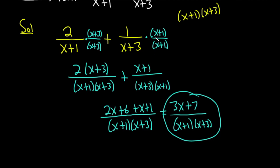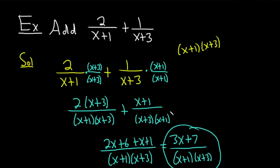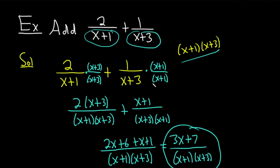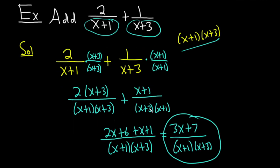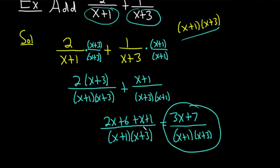As a recap: when you see a problem like this, find a common denominator by multiplying the two denominators. Then take each fraction and multiply by what's missing. Combine everything, add across, and finish up. Hopefully you've learned some math in this video. Make sure to check out more videos on Chegg. Until next time, good luck and take care.